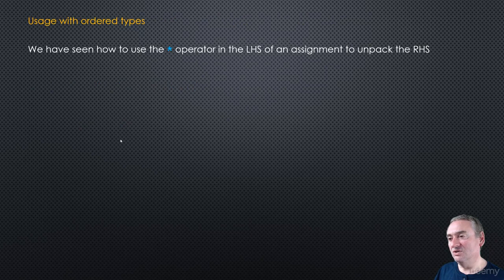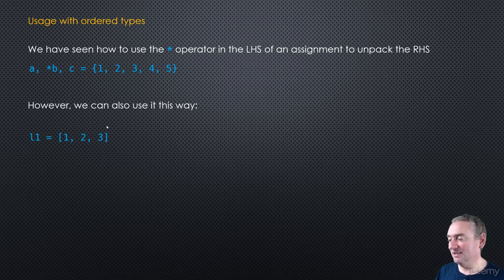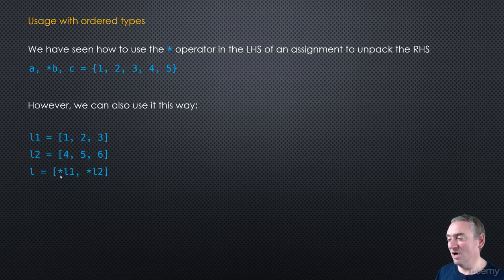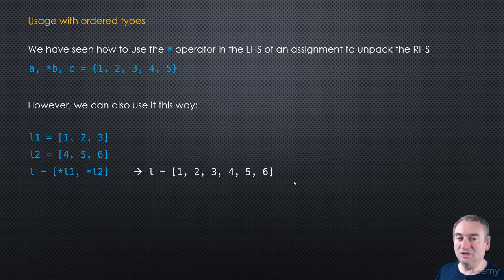We've seen how to use the star operator on the left-hand side of an assignment. But we can also use it on the right-hand side. Let's take two lists, L1 and L2, and write a new list using square brackets: [*L1, *L2]. Unpacking L1 creates the individual elements 1, 2, 3, and unpacking L2 creates 4, 5, 6 — so we essentially end up with a combined merged list.